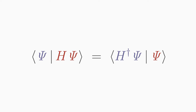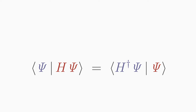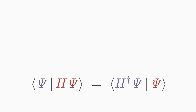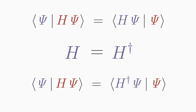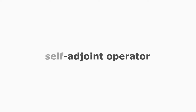Here you see the definition of an adjoint operator, H-dagger. This is an operator which is applied to the bra-vector and gives the same scalar product as the operator H, which acts on the ket-vector. Comparing the definition of the adjoint operator with the definition of the Hermitian operator, we see that H must be equal to H-dagger. An operator that is equal to its adjoint is called a self-adjoint operator.